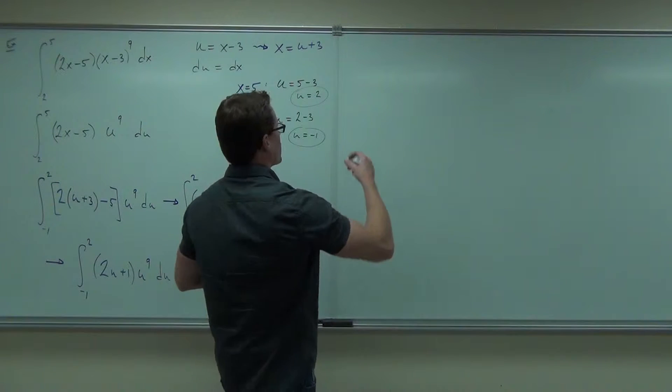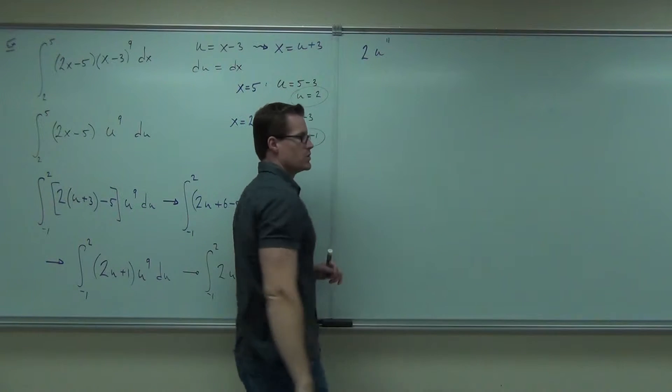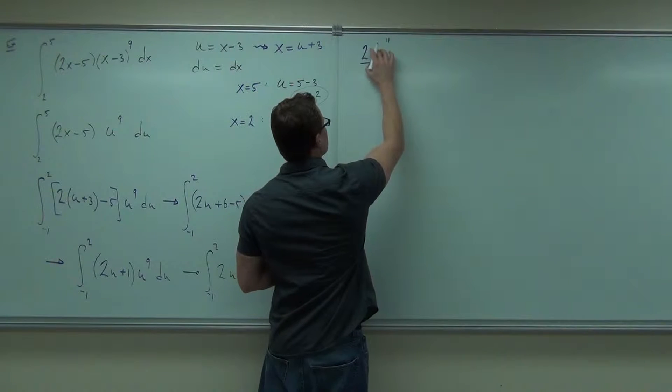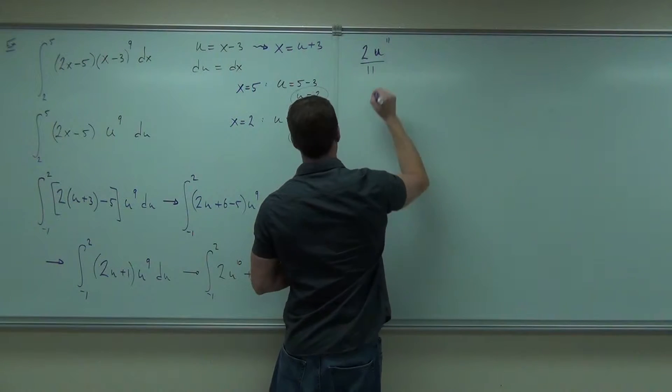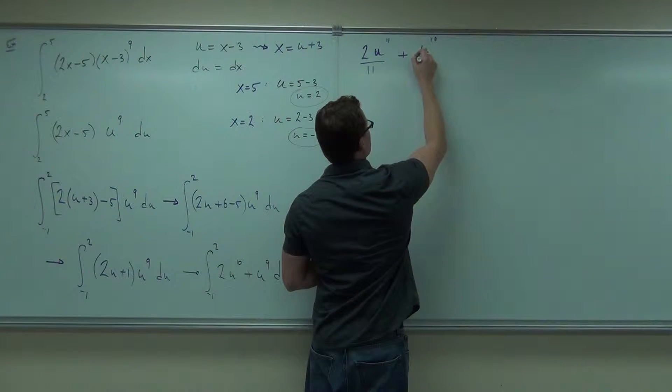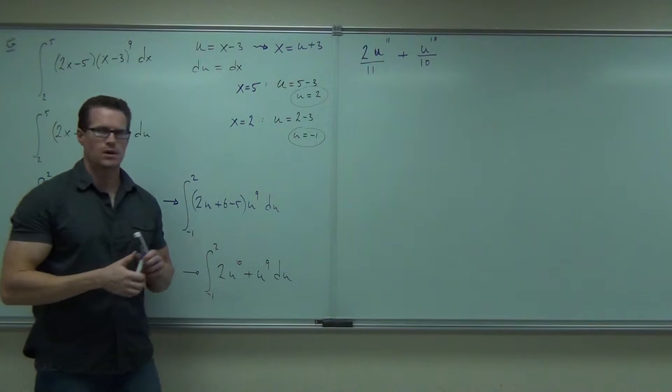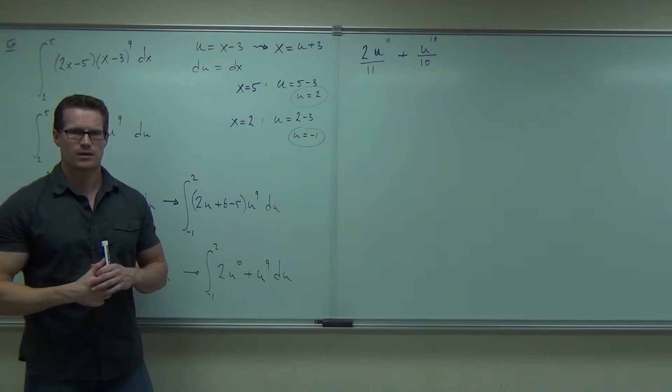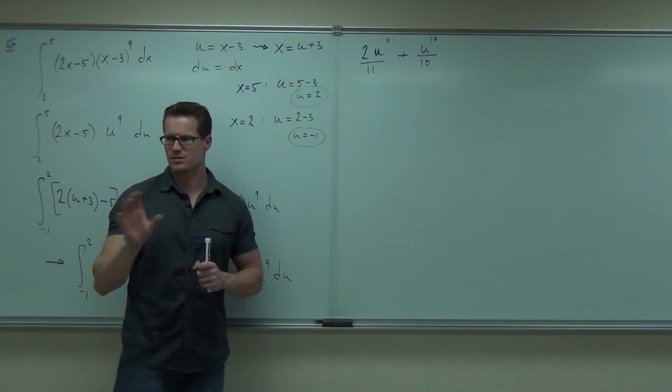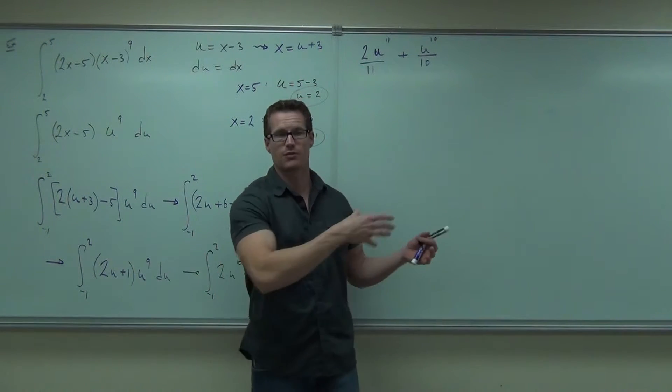Evaluate. So our integral is 2u to the 11th over 11 plus u to the 10th over 10. Are you guys okay with the integral? Some of those integrals are pretty nice, right? You should take the basic stuff and substitutions. That's what substitutions are supposed to do. It's supposed to make your integral easier, not worse. It definitely does make it easier.